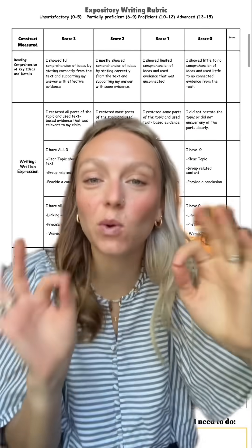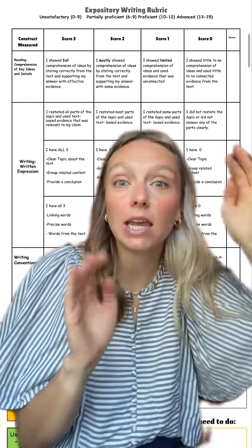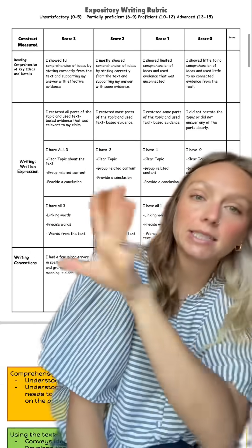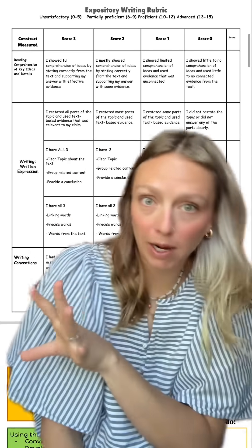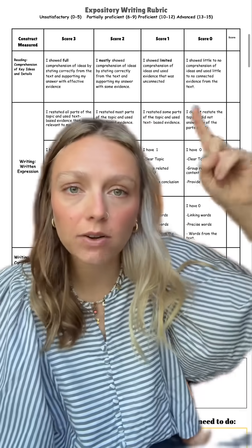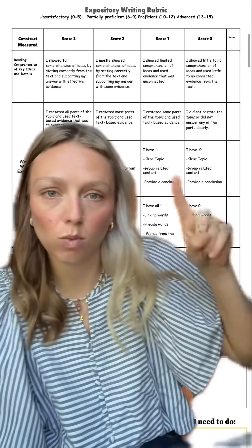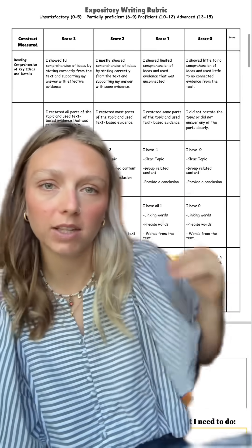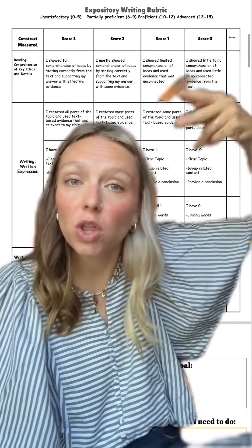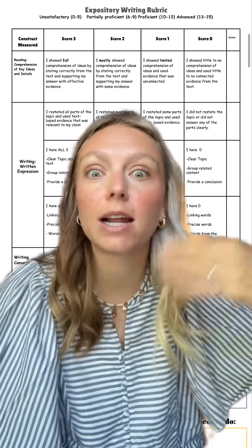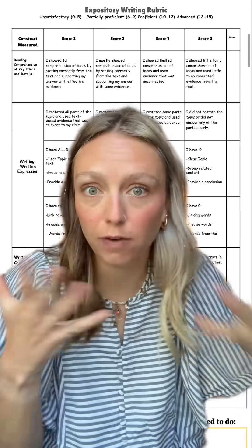The important part is the goal setting. They take their score, whatever they scored, and they look at the rubric and figure out where they scored. So maybe they scored a zero here, a zero here, one here, one here, and one here. So they identify the two categories where they scored zero — those are going to be where they need to focus.